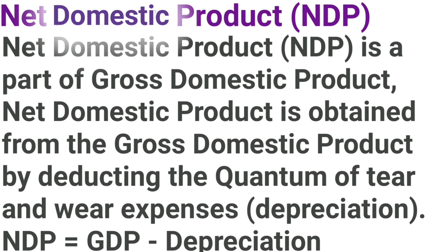Net Domestic Product is a part of gross domestic product. Net Domestic Product is obtained from the gross domestic product by deducting the quantum of tear and wear expenses, that is depreciation. NDP equals GDP minus depreciation.